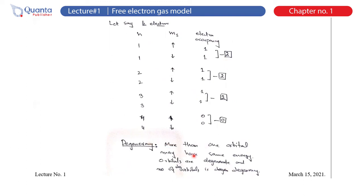More than one orbital may have the same energy — they are said to be degenerate orbitals. The number of orbitals having the same energy is called the degeneracy. In this case, two orbitals have the same energy, so the degeneracy is two. These are degenerate orbitals. Now your goal is to calculate the energy of these orbitals.